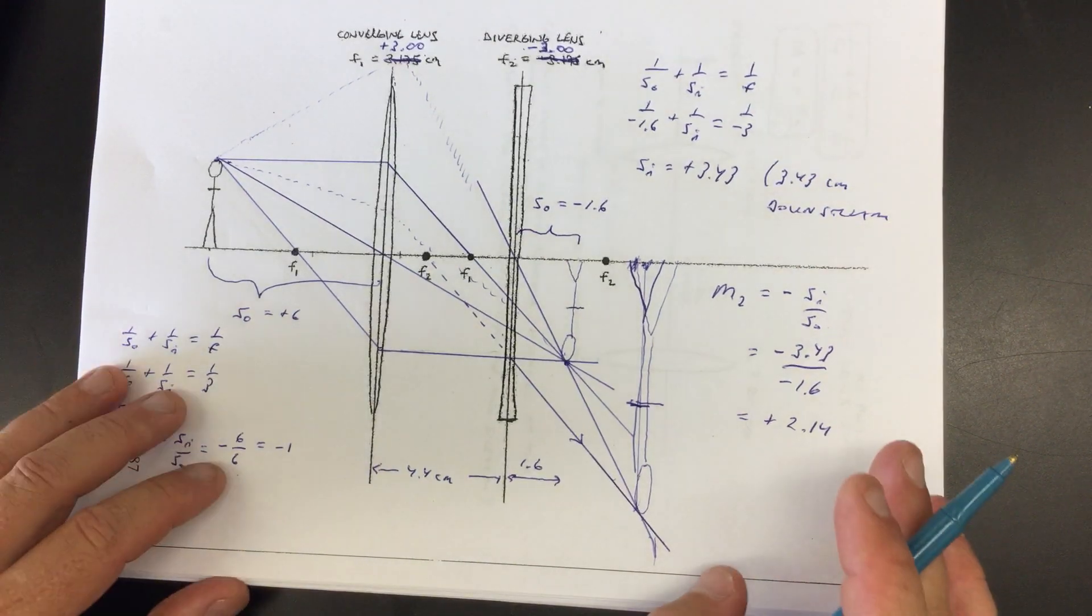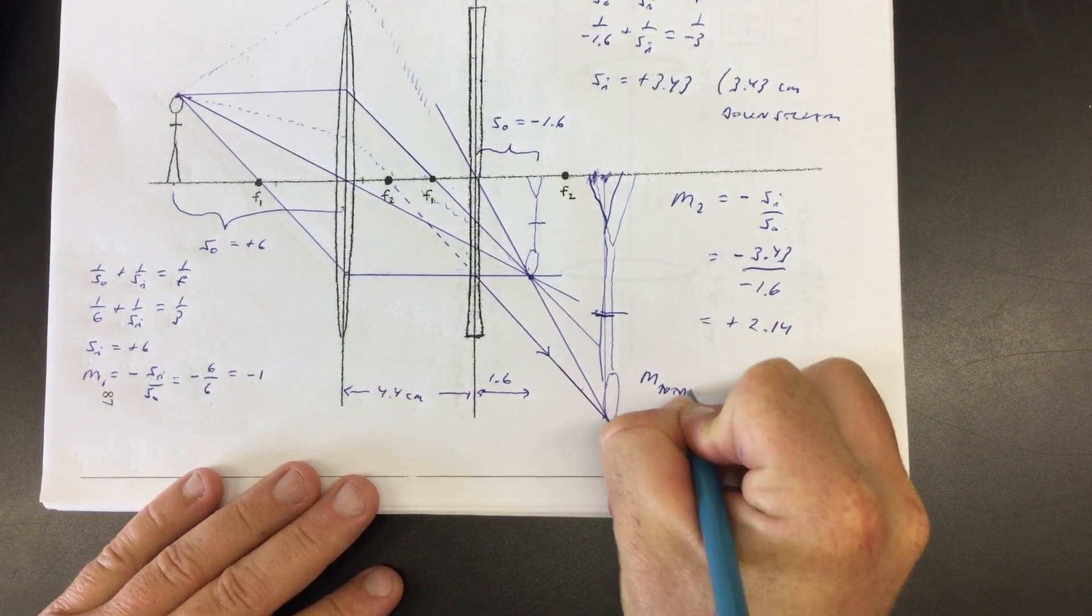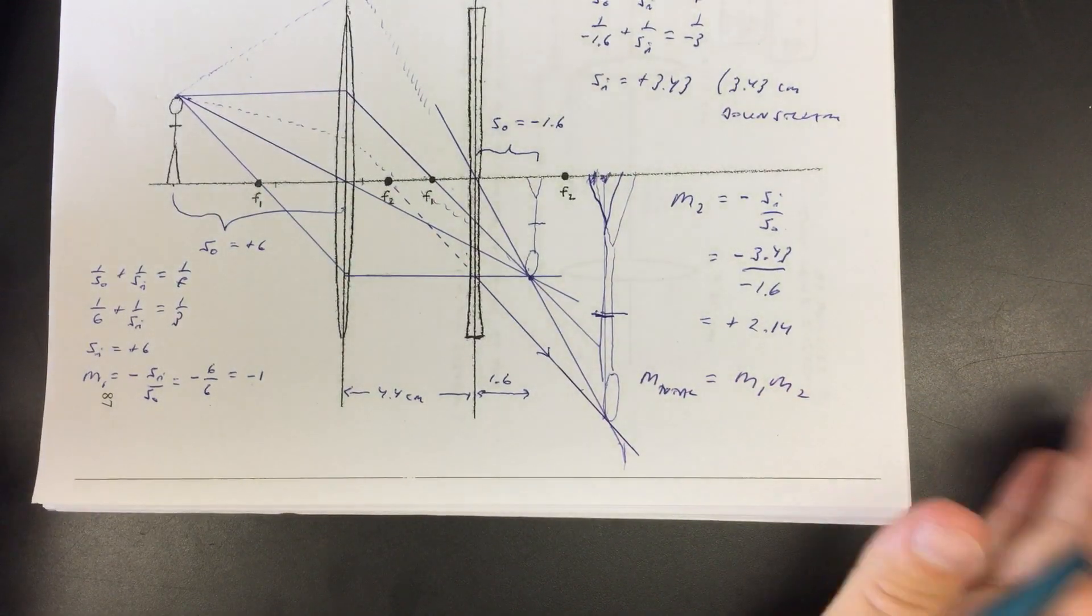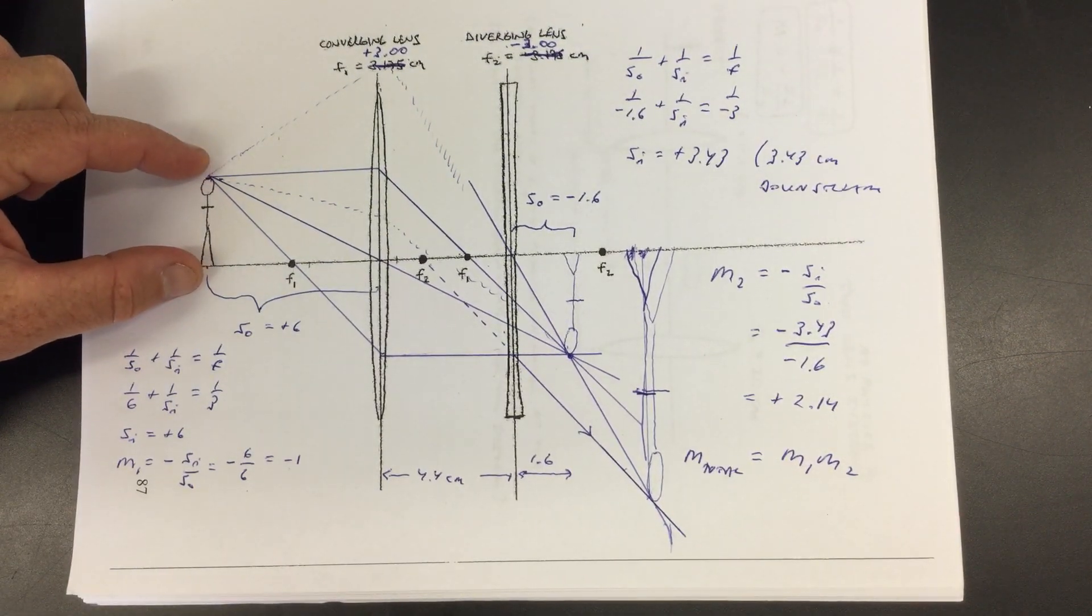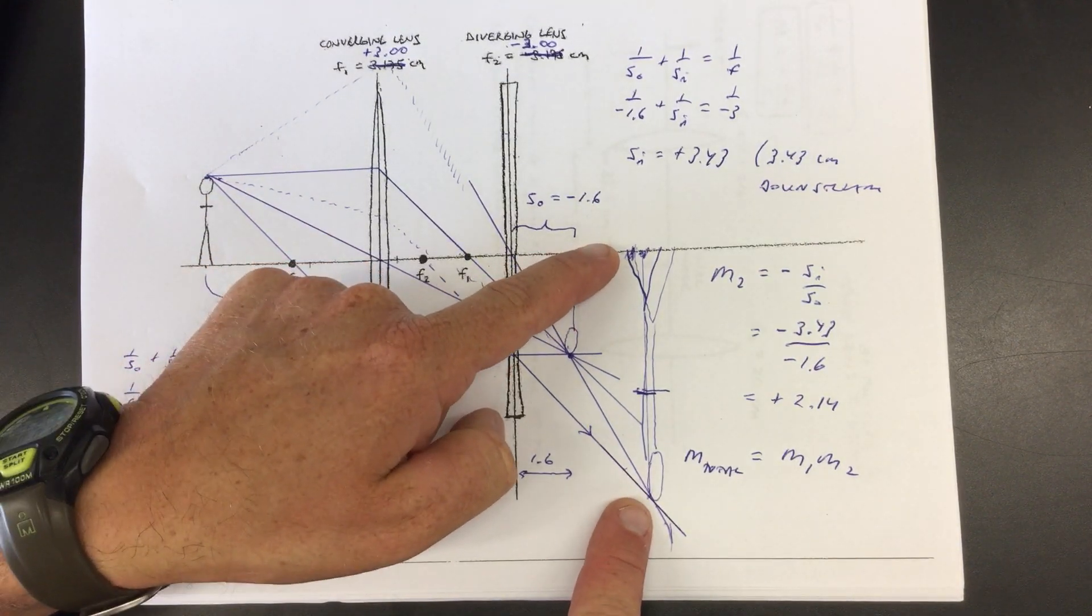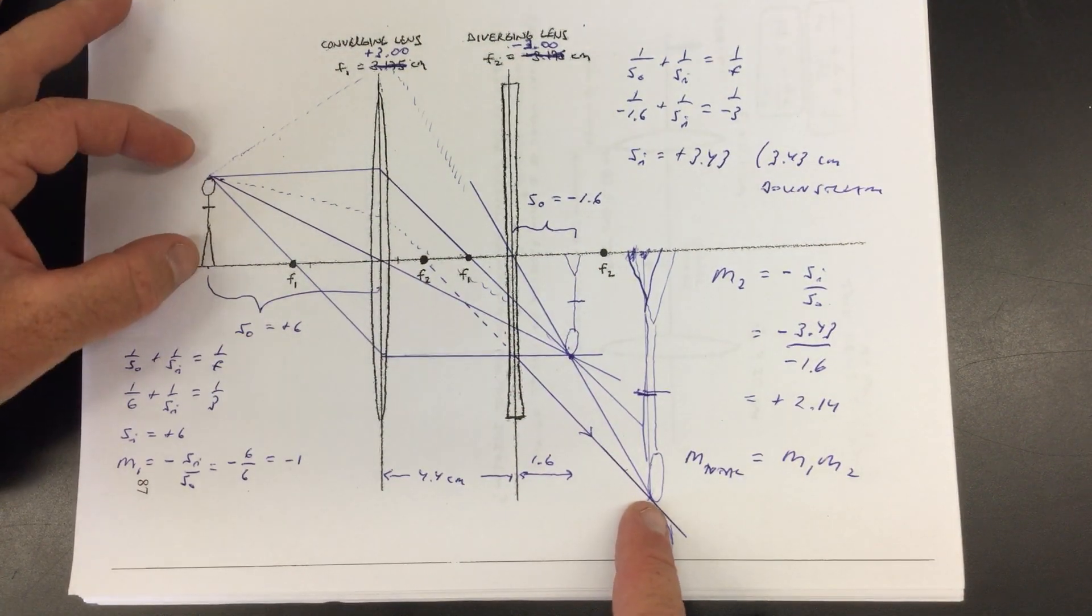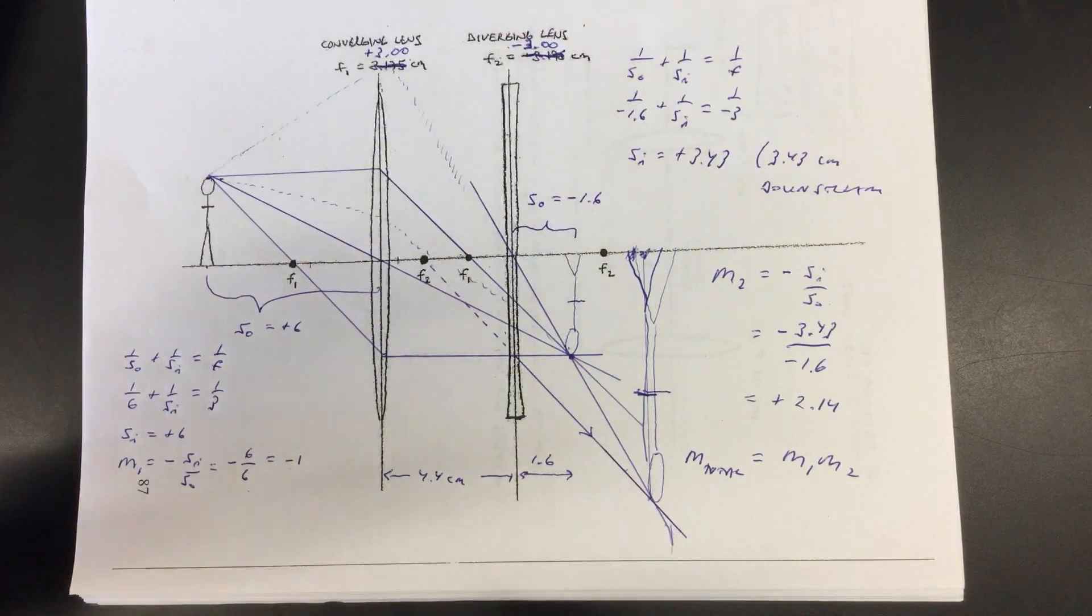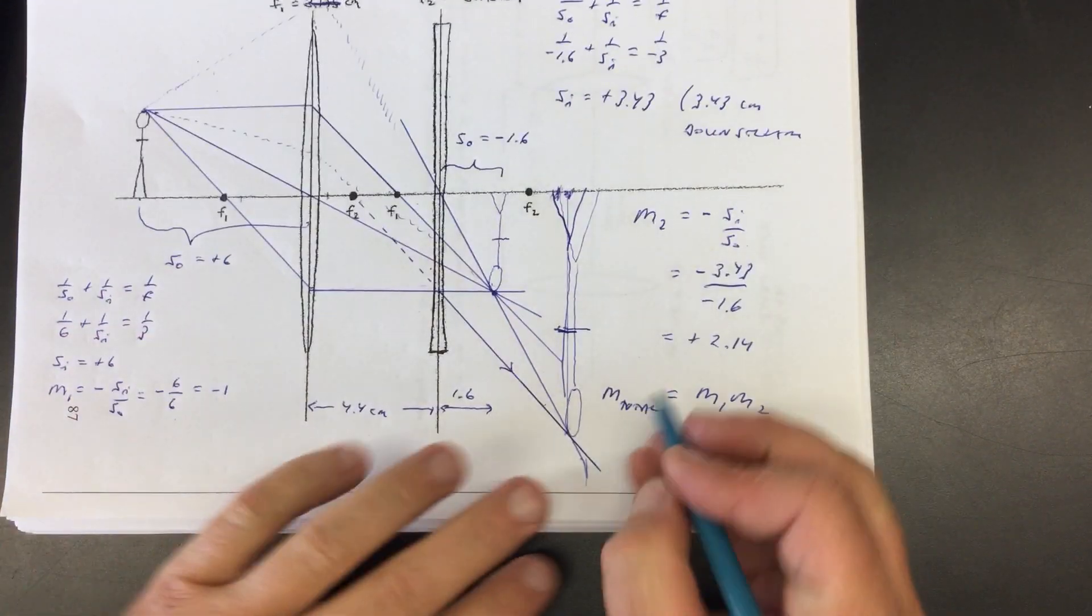Right. So now to finish this problem off, if you look at the system as a whole, M total, all right, that's going to be the product of M1 and M2. Now, before we calculate it, let's anticipate. Our input to the system was an object this big. Our output was something more than twice as big and upside down. So the output should be, the total magnification should be negative because this thing got flipped and it should be larger than one, in absolute value anyway, because it's larger, it's larger than the original thing. Well, so let's try it.